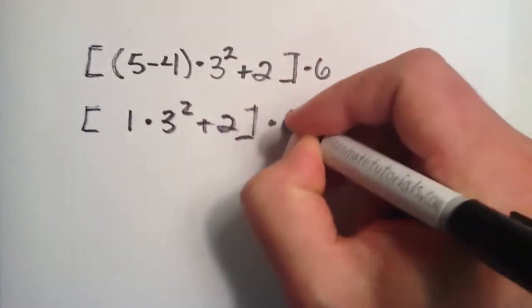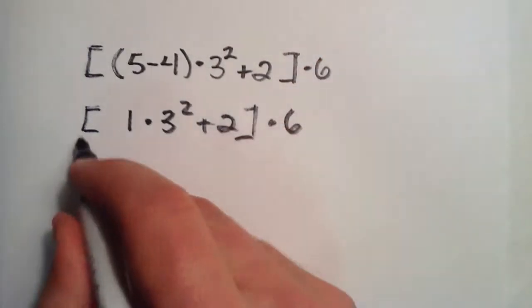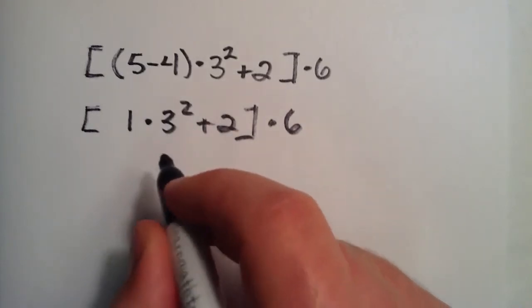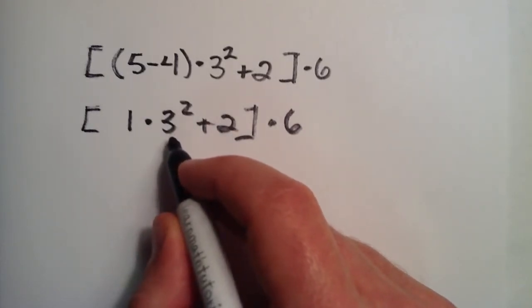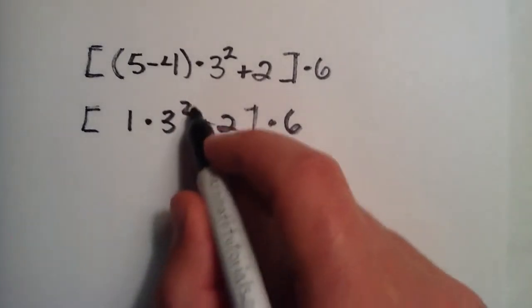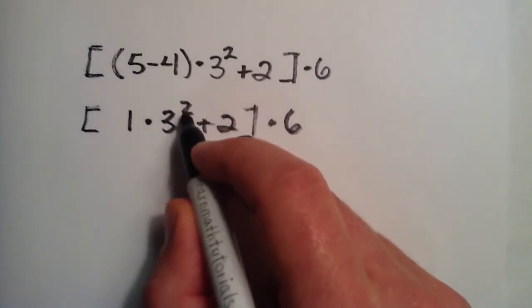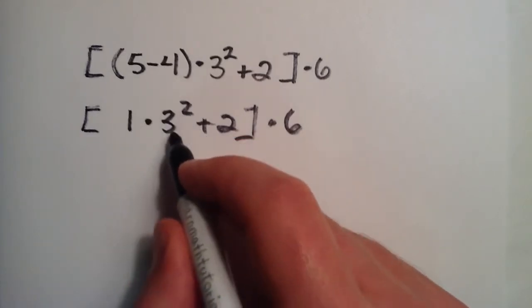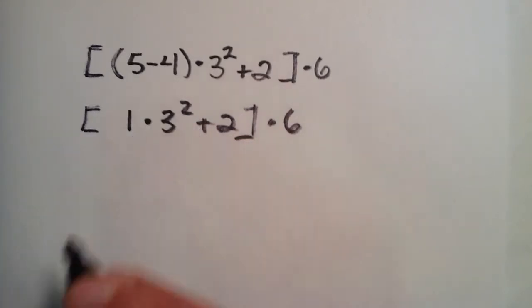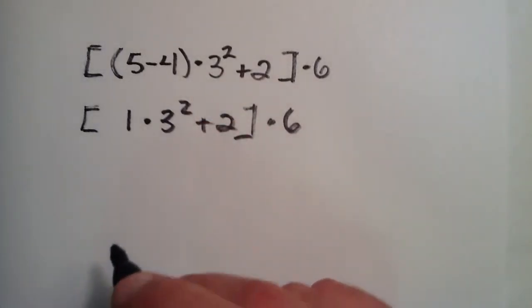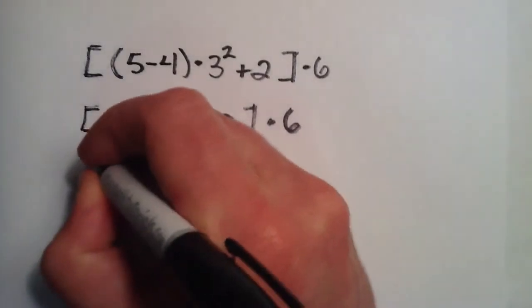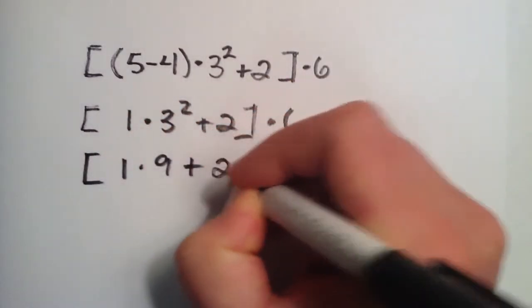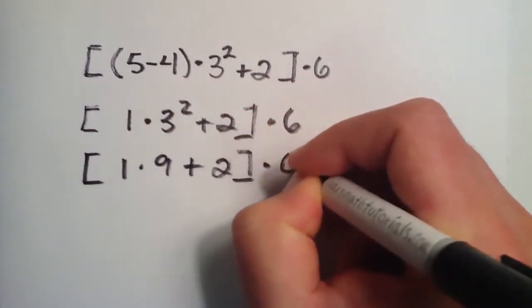So then the next step is we're still working inside this grouping. And out of all these operations, number 2 on our list is the most important, which is exponents and roots. So here's an exponential, 3 squared, so 3 to the second power, which is just 3 multiplied by itself 2 times. So 3 times 3 is 9. So we go ahead and change that to a 9 and write everything else the same.